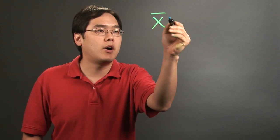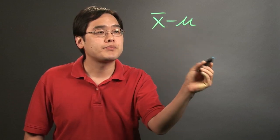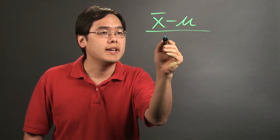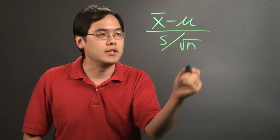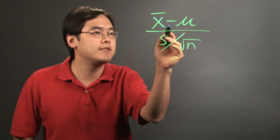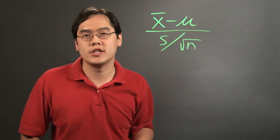So you first start out with x bar minus mu, and then you're going to divide by s over square root of n. So it seems a little complicated because you have subtraction in the numerator and division in the denominator.